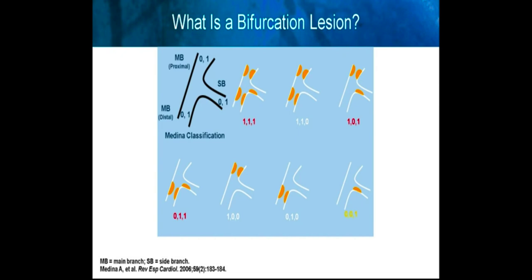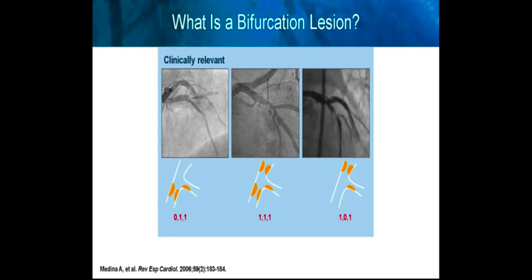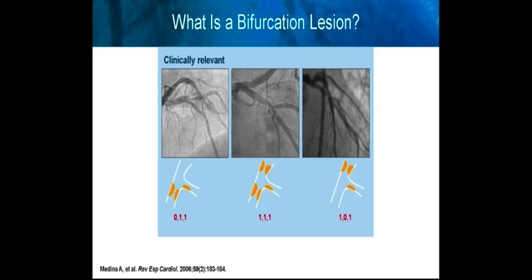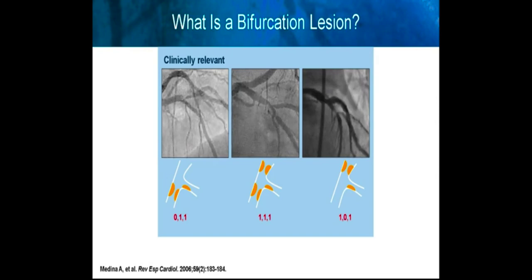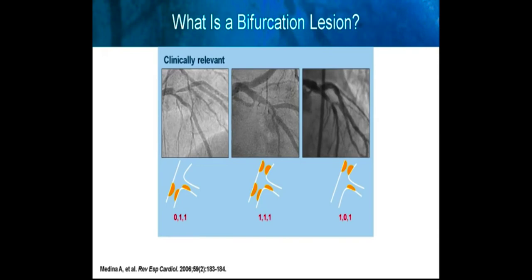What is a bifurcation lesion? Many of us are familiar with the Medina classification of bifurcations. This is largely academic and not particularly helpful in terms of clinical management. In clinical practice, bifurcations that require clinical relevance are really those which involve atherosclerosis of both the main branch and the side branch — typically recognized as Medina 011 on the left, 111 in the middle, and 101 on the right.